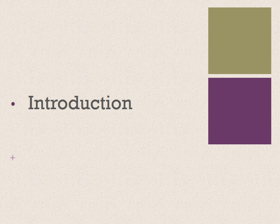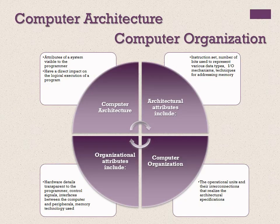Let's talk about the introduction to computer architecture basics, and a little bit about early designs. The first thing to discuss is computer organization versus computer architecture. There is a distinction often made between the two, and although it is difficult to give precise definitions for these terms, a consensus exists. Computer architecture basically refers to those attributes of a system visible to the programmer.